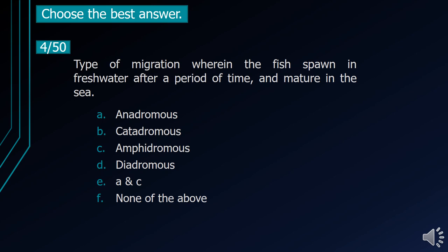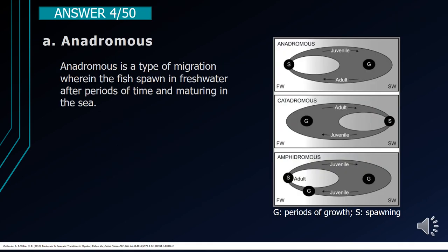Number 4. Type of migration wherein the fish spawn in freshwater after a period of time and mature in the sea. A. Anadromous. B. Catadromous. C. Amphidromous. D. Diadromous. E. A and C. F. None of the above. The correct answer is letter A, Anadromous. This is the type of migration wherein the fish spawn in freshwater after periods of time and maturing in the sea.